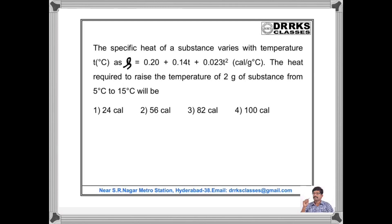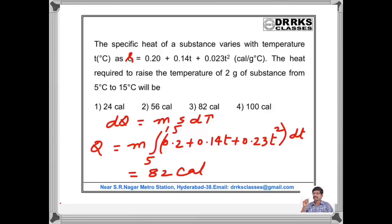Look at this problem where the specific heat varies with temperature and you have to find the amount of heat required to raise the temperature of 2 grams of a substance from 5°C to 15°C. We know that DQ = M·S·dT, so Q = M·∫S·dT. Substituting the value of S and integrating within the limits 5 to 15 gives 82 Calories.